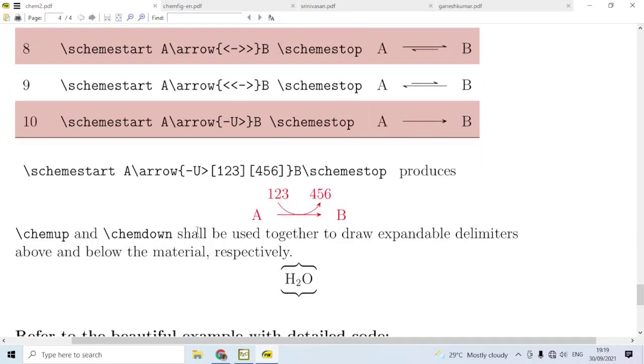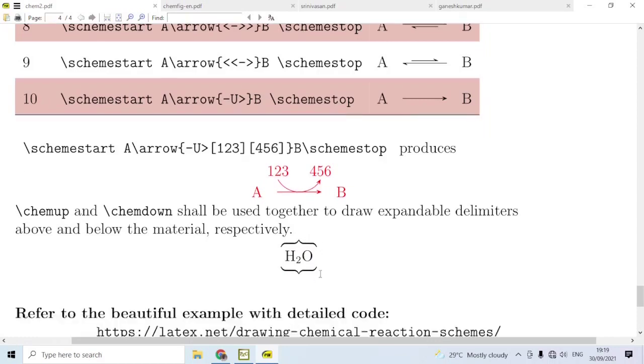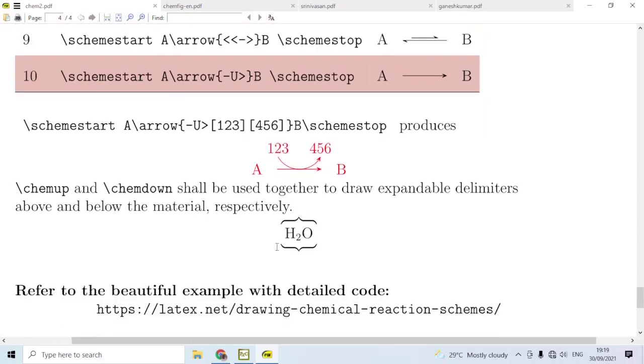Again, if you are interested, you may use \chemup and \chemdown together to draw expandable delimiters above and below any structure. Here we have used chemup slash brace open, and then here we have used chemdown slash brace close.